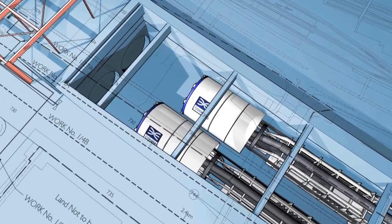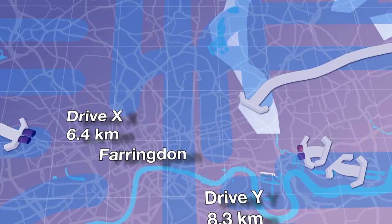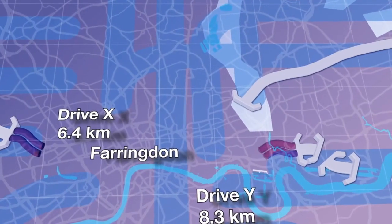Crossrail's first pair of TBMs, Phyllis and Ada, will construct Drive X, travelling from Royal Oak to Farringdon.